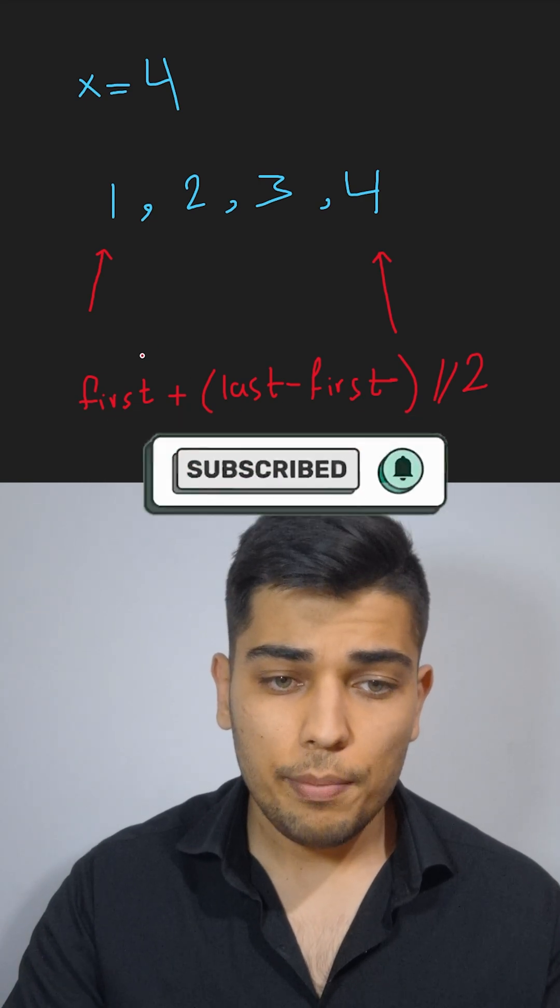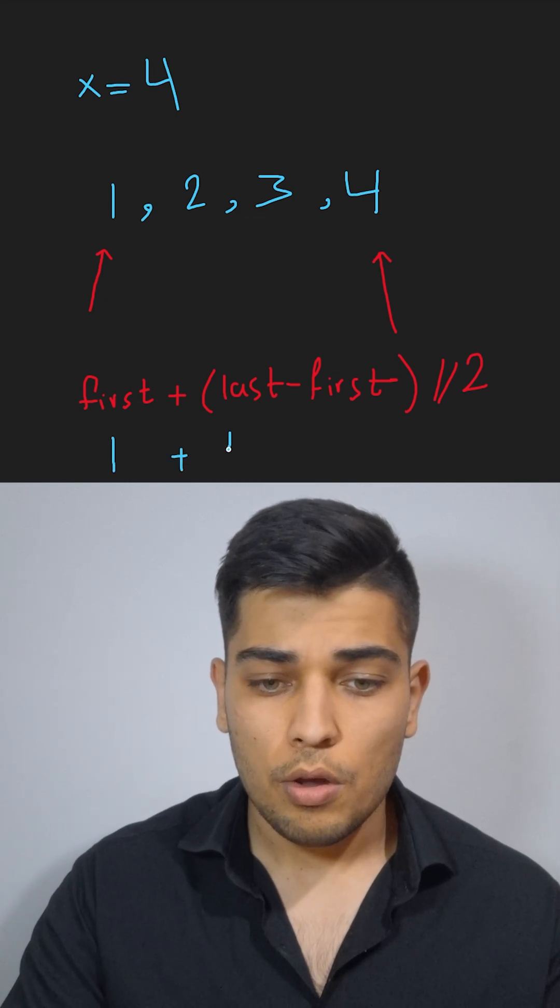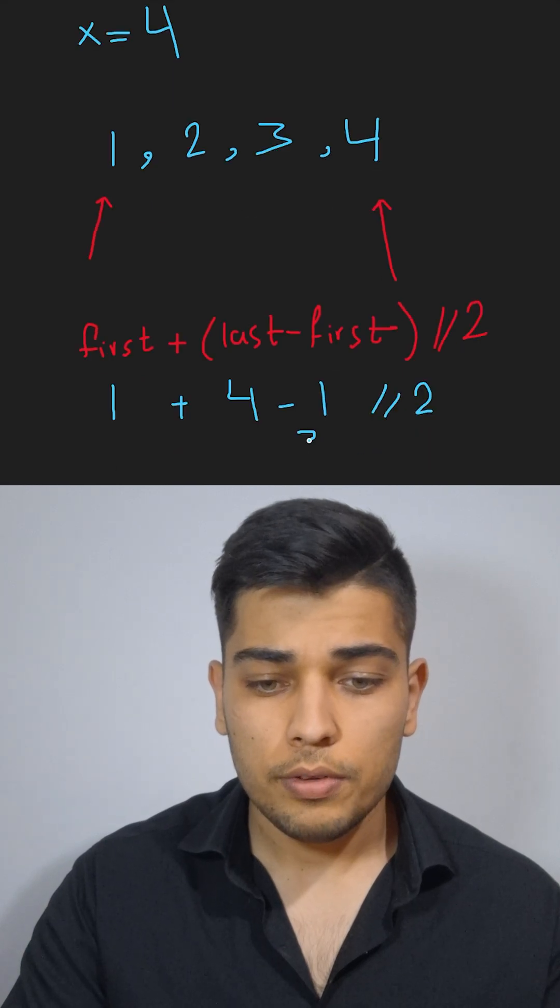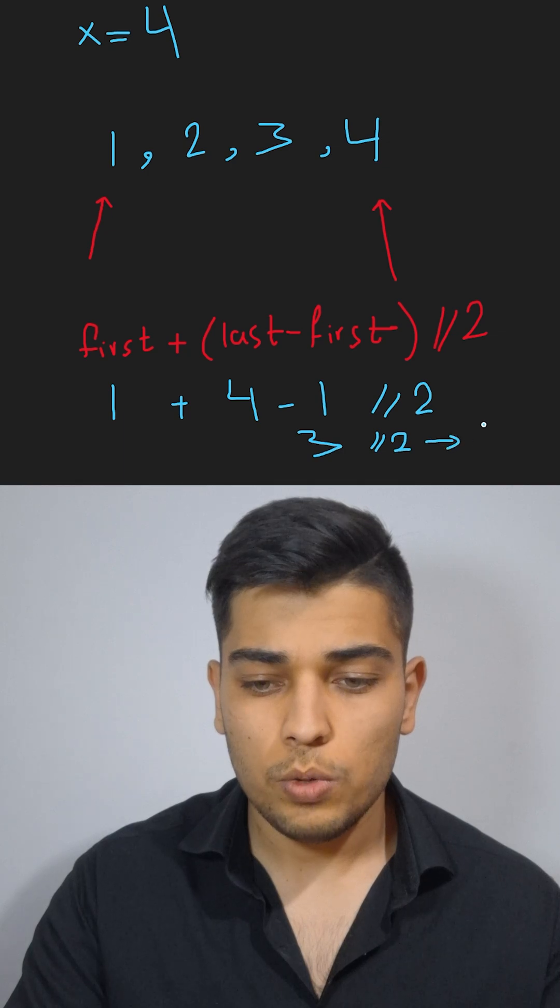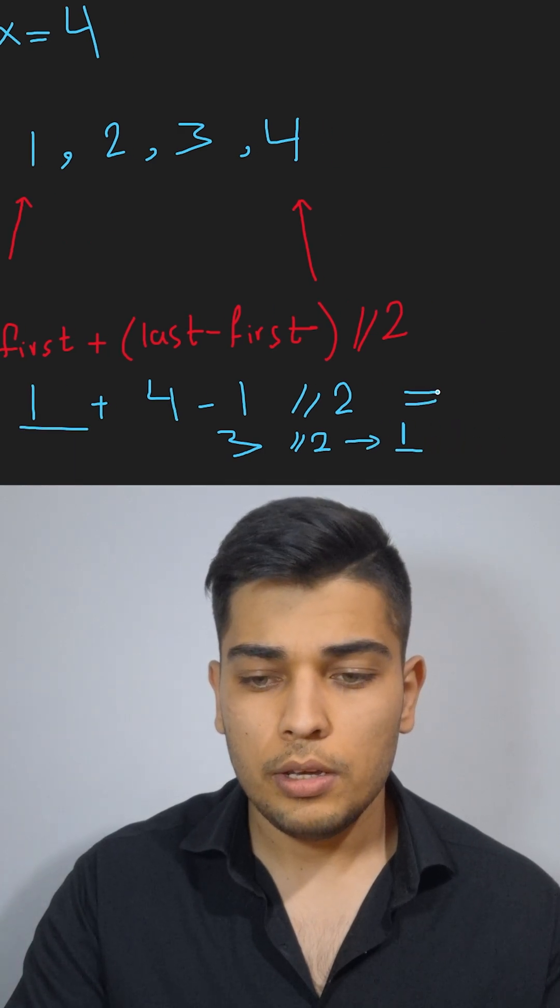So if we apply this to our question, it's going to be 1 plus (4 minus 1) divided by 2, which is 3 divided by 2 equals 1 in integer division, so it's going to be 1 plus 1 that equals 2.